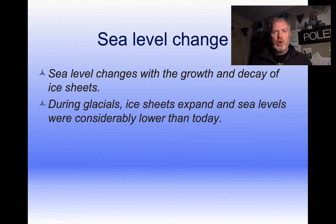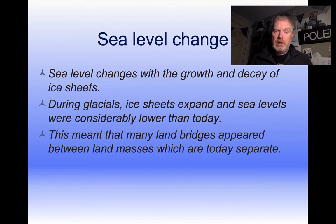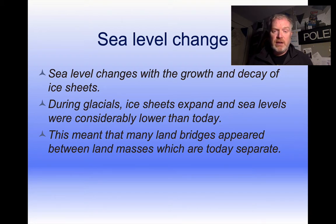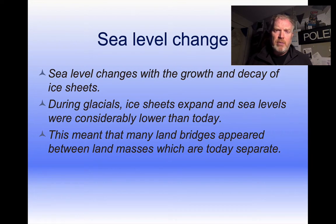That large volume of ice will have a mass that can also have an effect on the crust. But generally, during glacial periods we see periods of low sea level, and during interglacial periods we see periods of high sea level. Where we get periods of low sea level, we can get land bridges appearing — dry areas of land between now-separated land masses — which has had a big impact on things like human migration around the world.